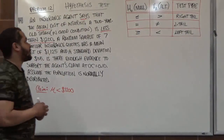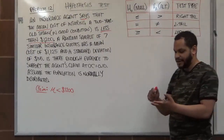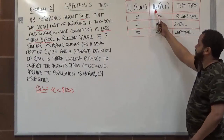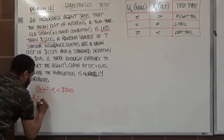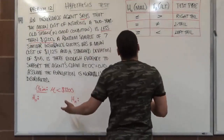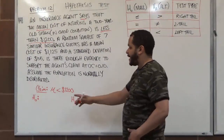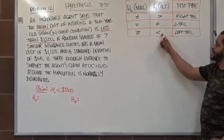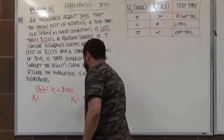Using the hypothesis testing table, we place H₀ and Hₐ side by side. The table helps us determine whether the claim belongs to the null or alternative hypothesis. Looking at the less than symbol with the mean being less than $1,200, we see that the less than symbol corresponds to the alternative hypothesis. So the alternative hypothesis is our claim.